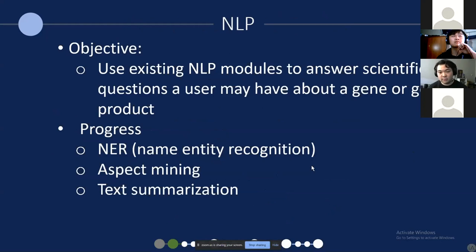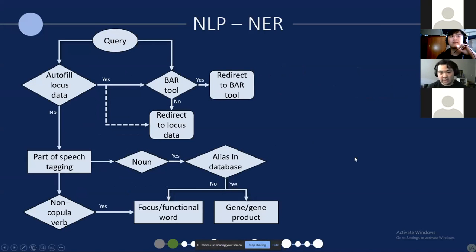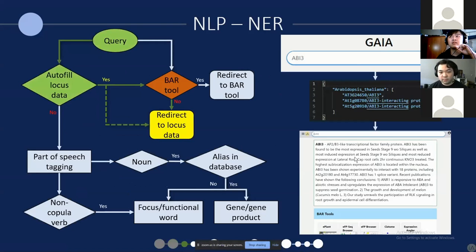For the NLP, we use existing publicly available models for free, and we use them to provide scientific answers to questions. We have three aspects of NLP: named entity recognition, or NER; aspect mining; and text summarization. The first aspect is named entity recognition. When you have a query or question, it breaks it down and understands what is inside and how it can be contextualized. So let's say you have a query — "ABI3." The first thing we do before NER is check whether there are any exact matches to an existing locus, gene, or gene product, and whether there is an exact match to an existing BAR tool or a combination of those two.